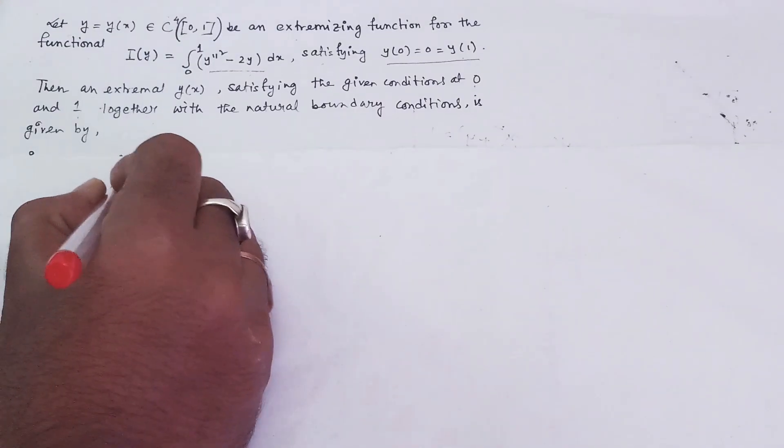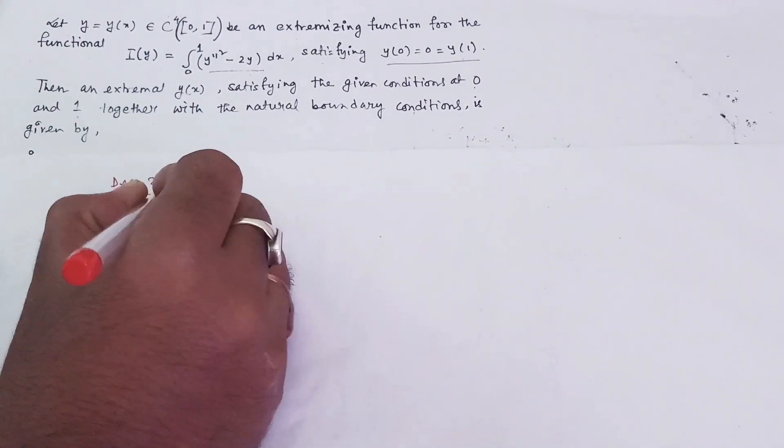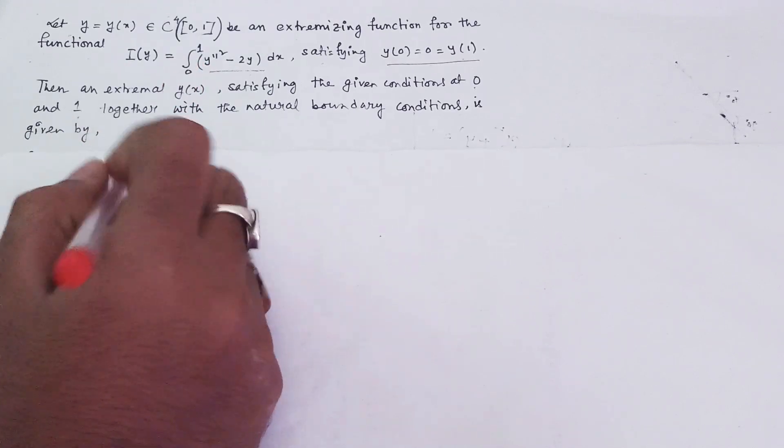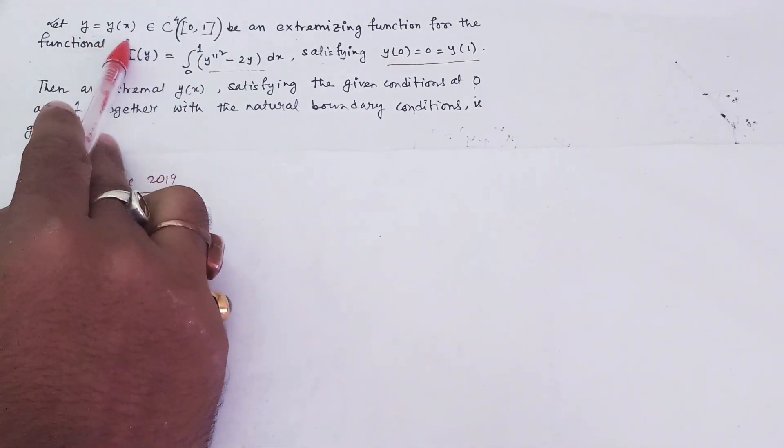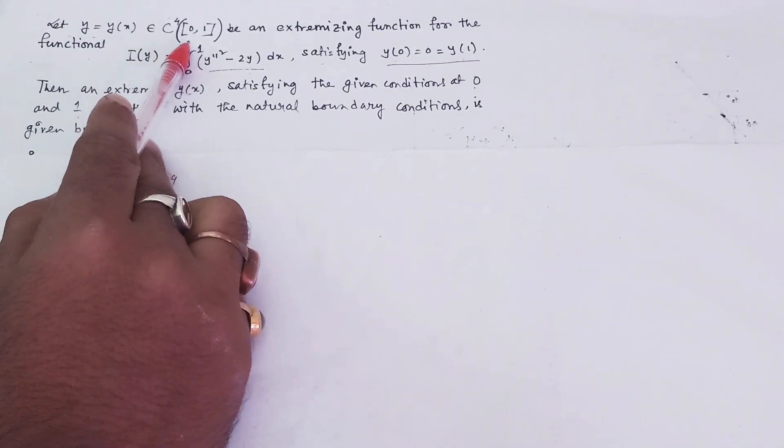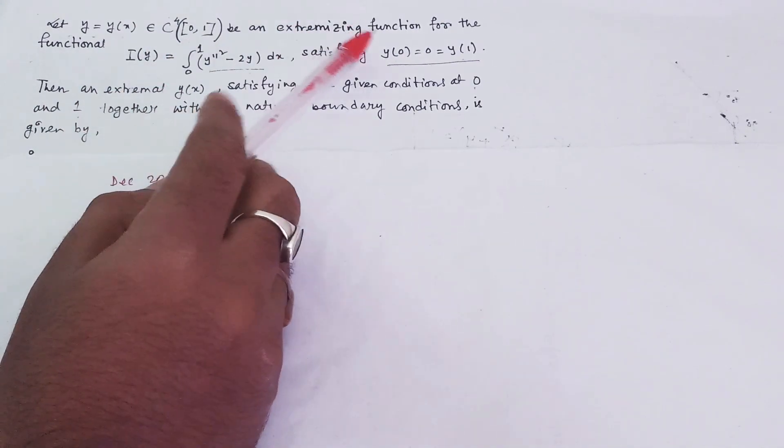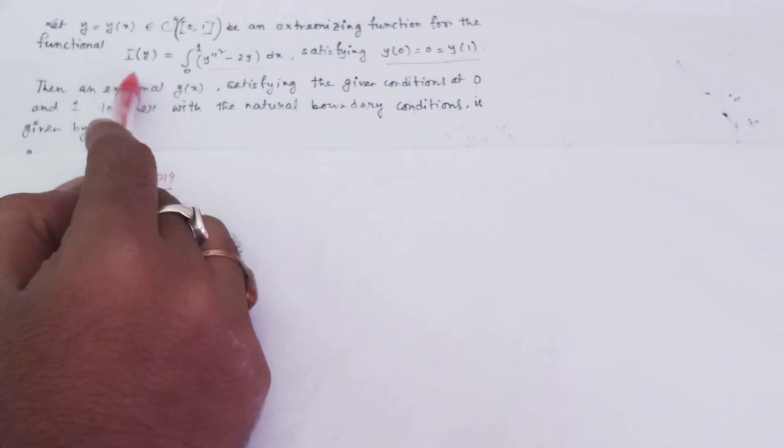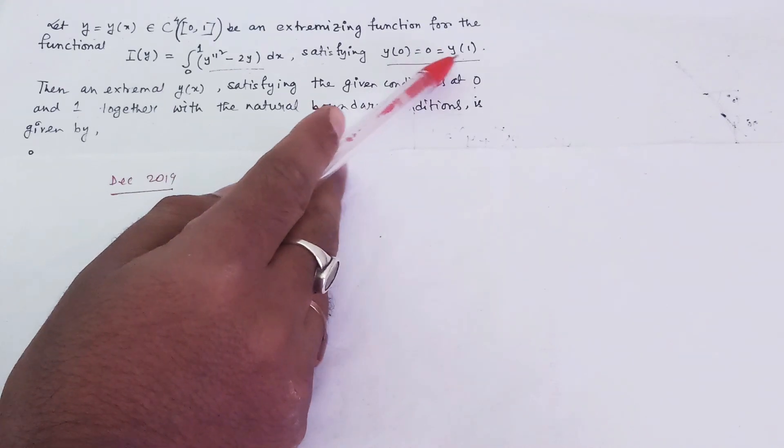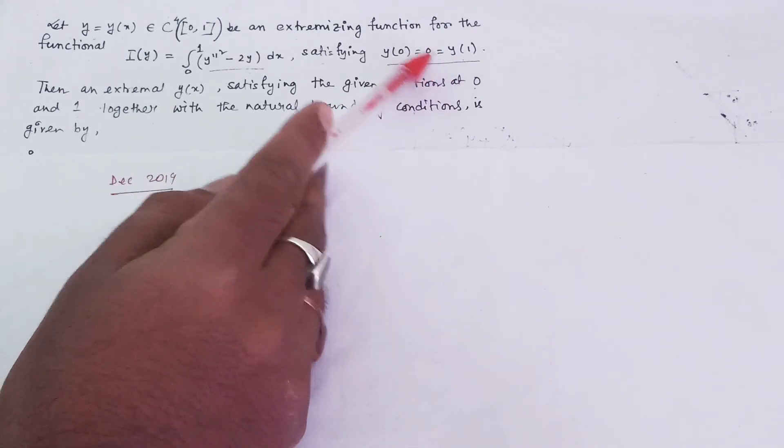This question is from the calculus of variations section of the December 2019 paper. It states that y = y(x) belongs to the C⁴ class of functions in the interval [0,1], and is an extremizing function for the given functional, satisfying y(0) = 0 and y(1) = 0.